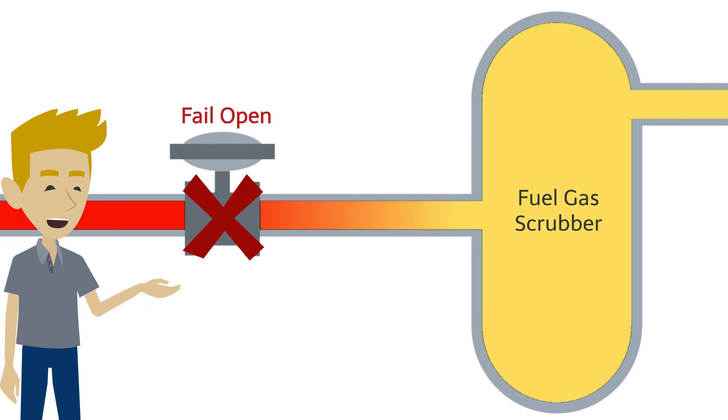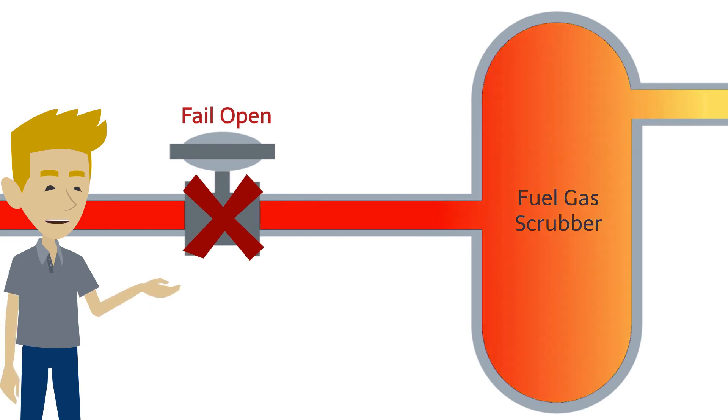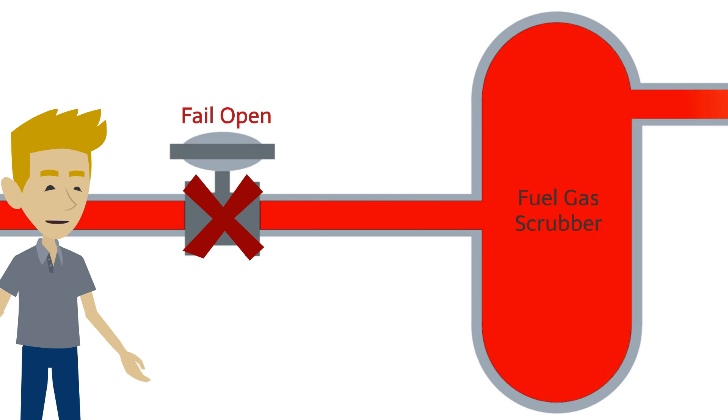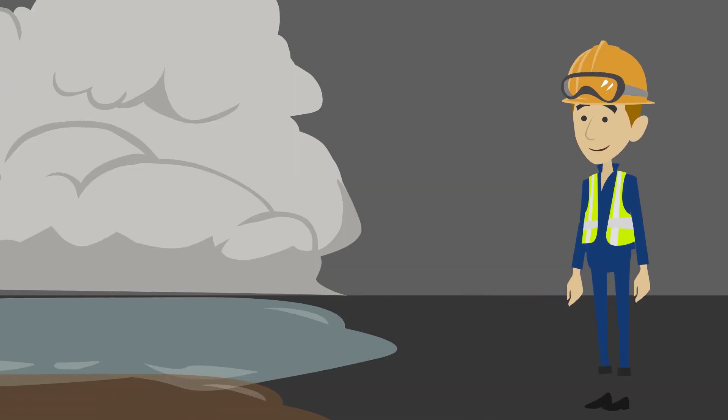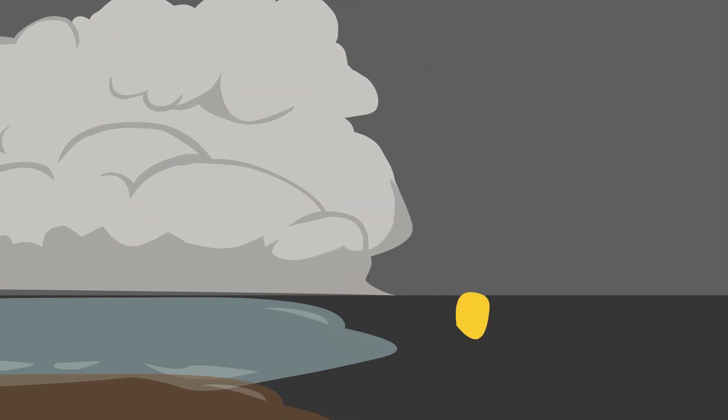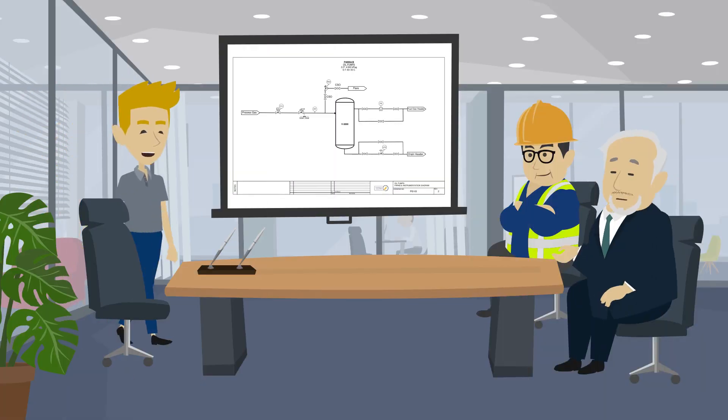high-pressure process gas at 6000 kPaG will overpressure the 4000 kPaG-rated scrubber. Overpressuring a vessel can lead to a vapour cloud explosion, and if someone is in the area, a potential fatality.